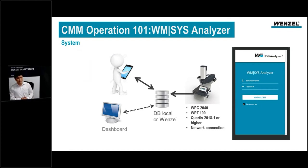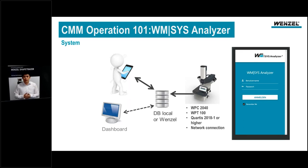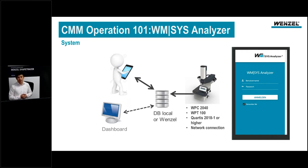Here is the concept of the application. You see a CMM with a controller — the controller collects the data, which is then adapted and processed by a proxy. Clients in the background send this data to a local server or to the Wenzel server, and the user can access it via a web application on a smartphone, tablet, or PC. The requirements are: a CMM with a WPC 2040 controller, a temperature box WPT 100 if you want to display temperature, and measuring software Quartis 2018-1 or a higher version, plus an approved network connection.